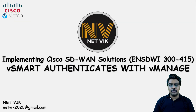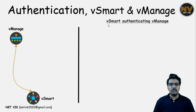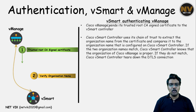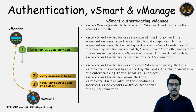Now let's talk about how vSmart and vManage authenticate between them. The authentication process between controllers will be very similar. Starting with vSmart authenticating vManage: vManage sends its signed certificate, vSmart checks the organization name, and then validates the signed certificate itself.